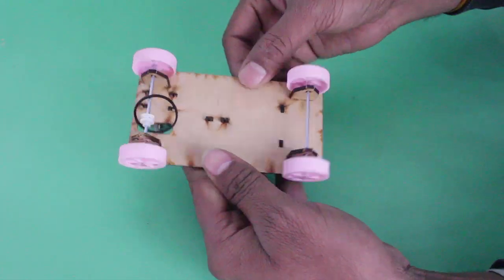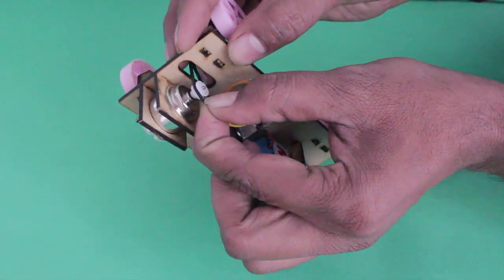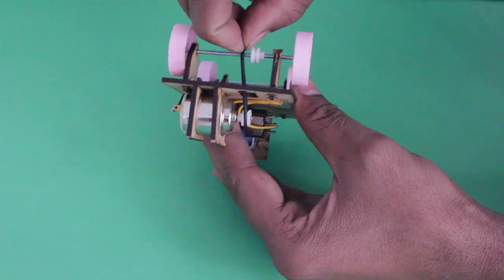Finally connect the motor pulley to the axle pulley with a rubber band. The car is assembled and ready to run.